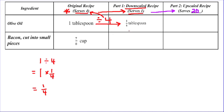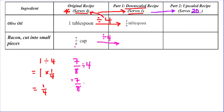We can do the same thing with the bacon. I have seven eighths, and I'm going to divide by four to find out how much bacon I would need for one person. So it's the same process: seven eighths divided by four, which is equal to seven eighths times...